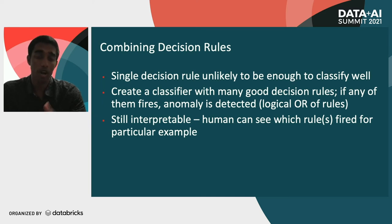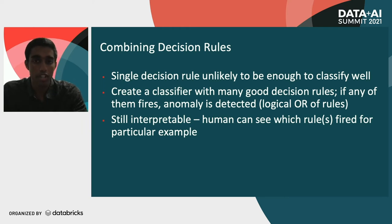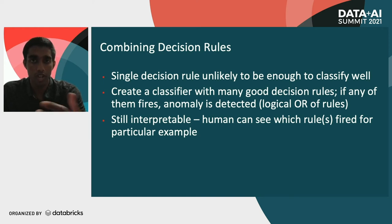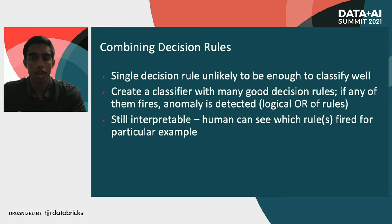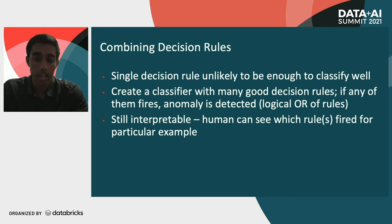This is still interpretable — a human can see which rules fired for a particular example and analyze what those rules are doing because each rule is pretty simple. We also try to keep a fairly small number of overall rules in our classifier. We prune out redundant rules so that you can look at all rules in your classifier and understand them without being overwhelmed.